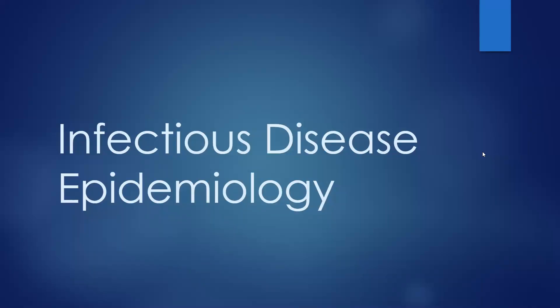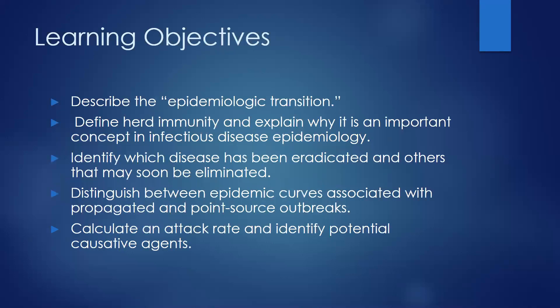Hi everyone. Today I will be talking about some of the basics of infectious disease epidemiology, and some of this information will be useful as you work on assignment six, which covers an outbreak that happened in Argentina. Quick learning objectives: we'll review what the epidemiologic transition is, talk about immunity, herd immunity, vaccines to prevent diseases, disease eradication, and how we measure outbreaks — specifically epidemic curves and how to calculate attack rates to help identify what might be causing an outbreak.